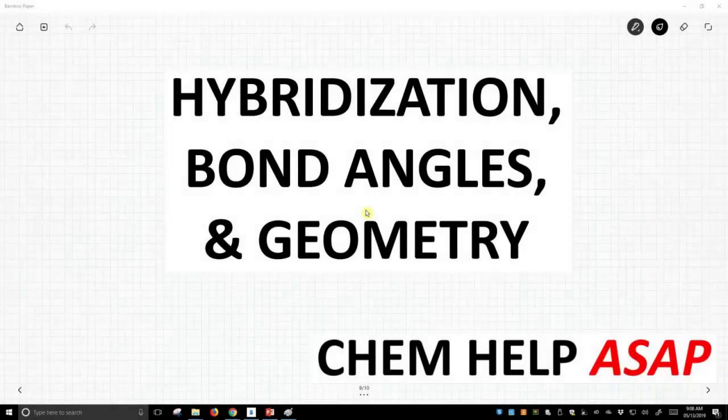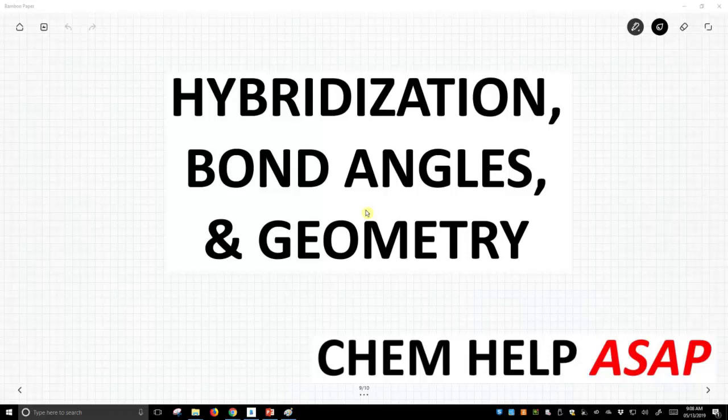Welcome from Chem Help ASAP. We've said hybridization is used to predict bond angles and geometries. Now let's see what kind of bond angles and geometries we encounter with hybridized atoms.